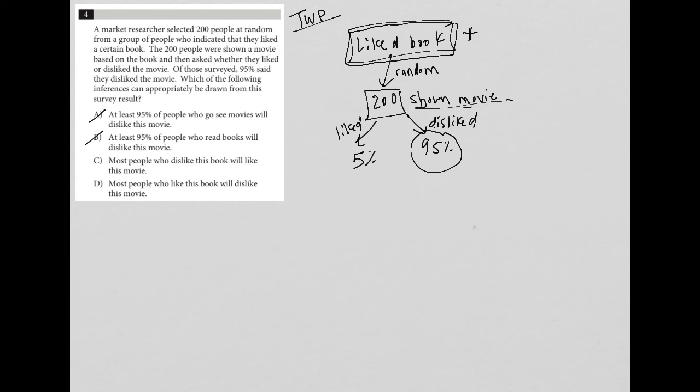Choice C says most people who dislike this book will like this movie. We don't know that for sure, right? Because our random sample came from people who liked the book, not from people who disliked the book. So we can't say anything about those people. So that's out.